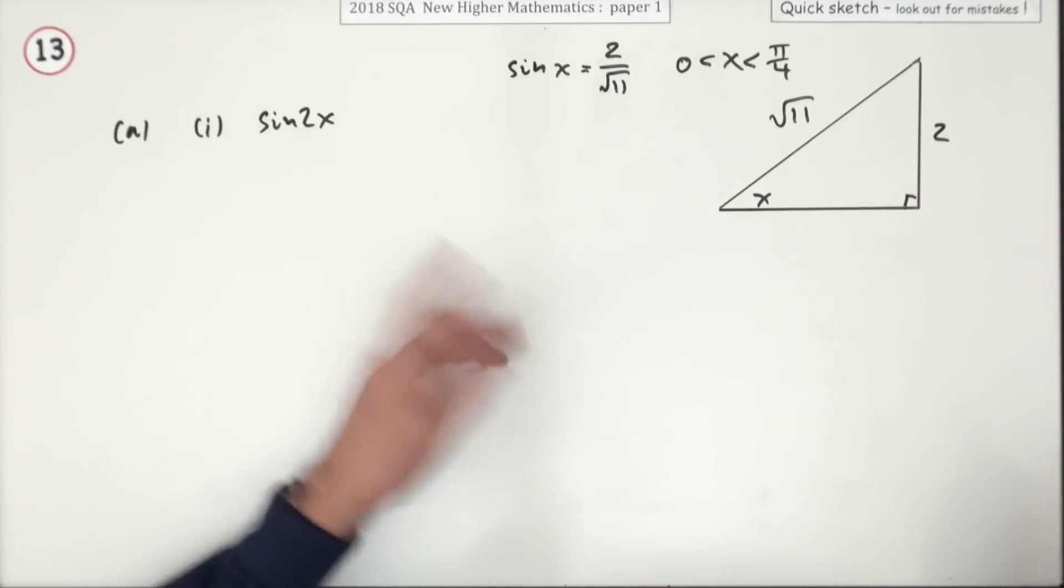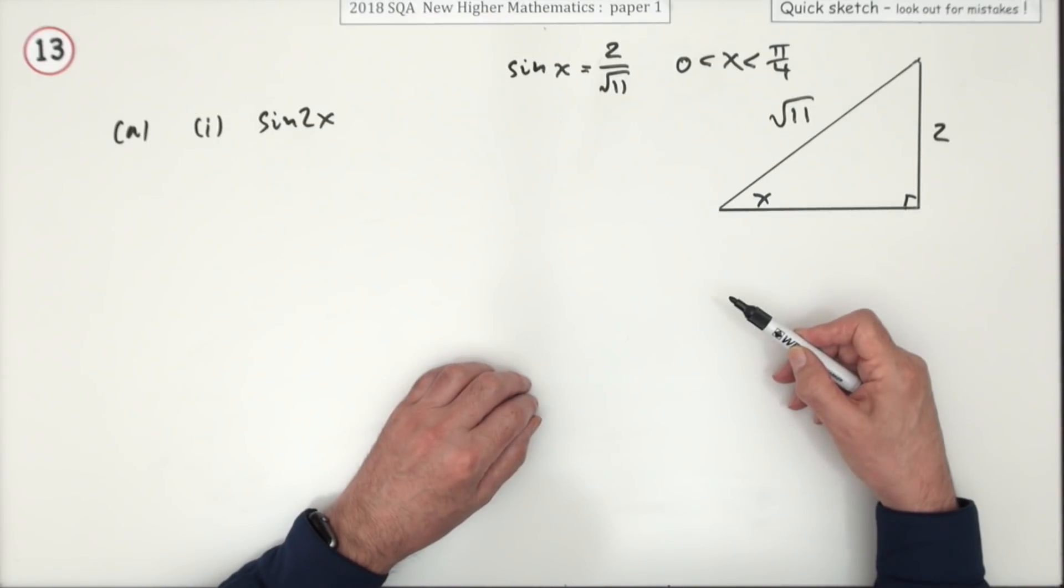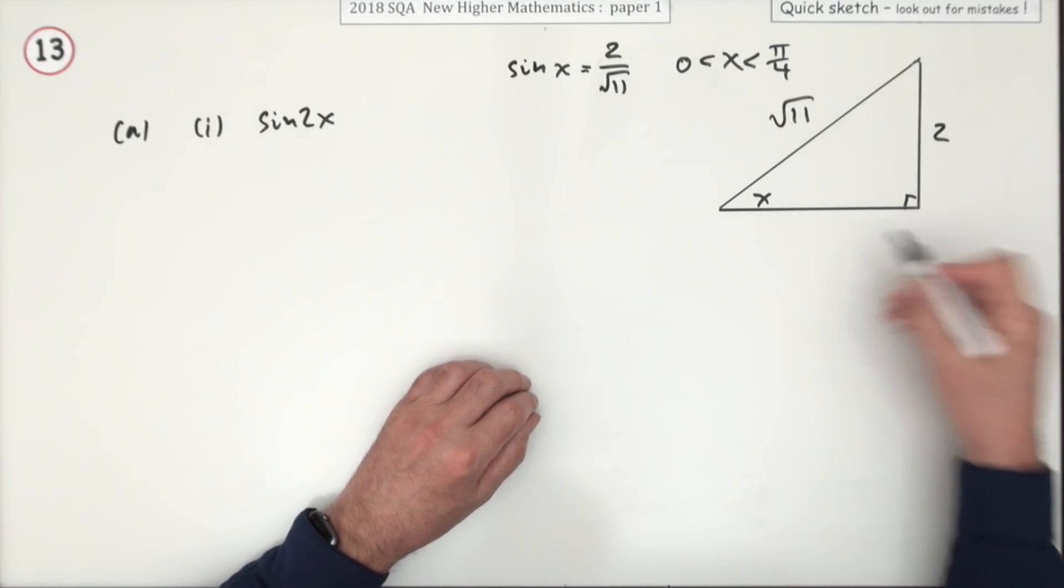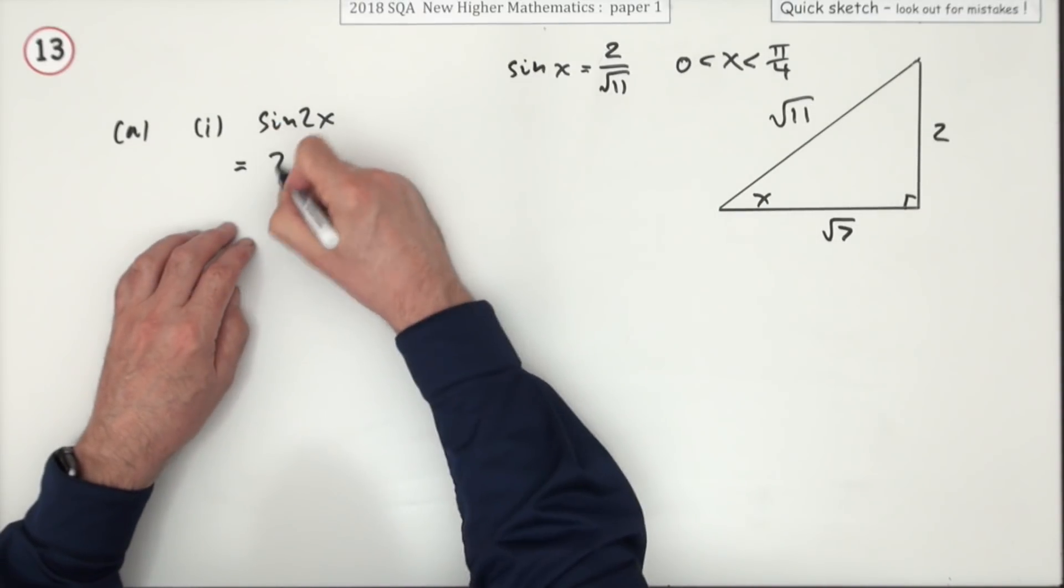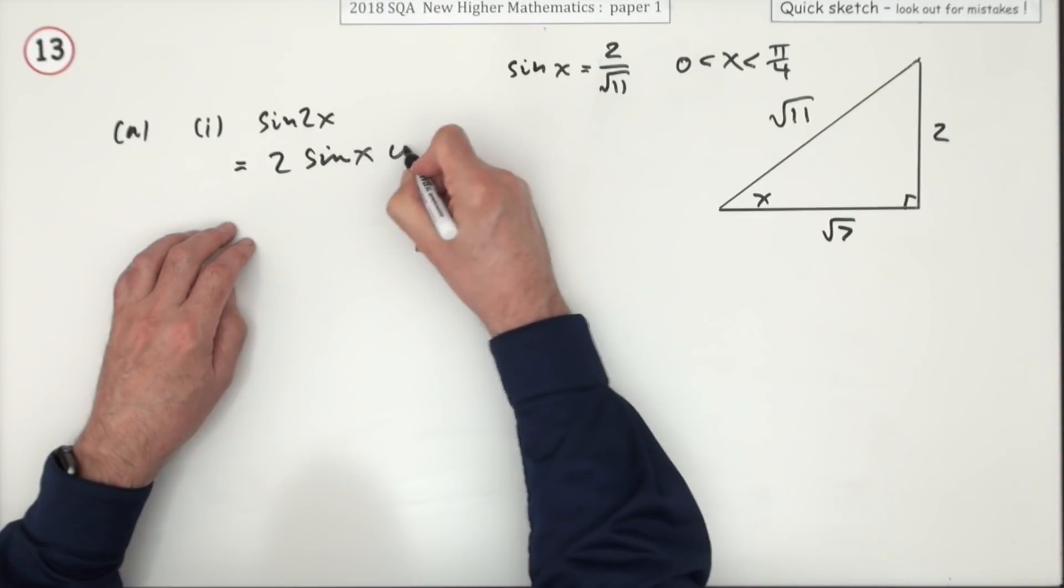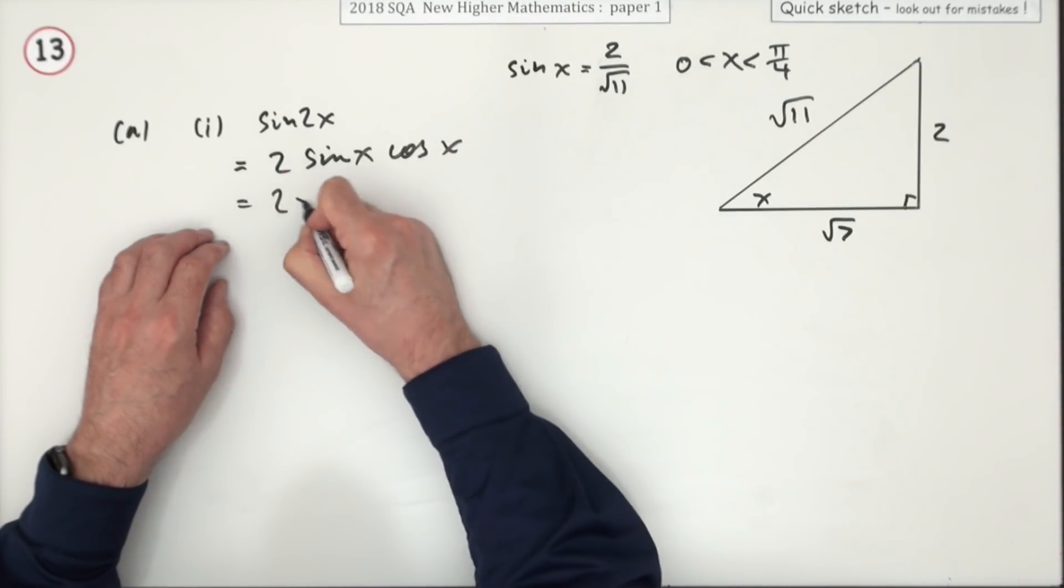Well, just fill in the remaining part. 4 from 11 is 7, so that side must be root 7. Then you'll look up the front and you see 2 sine x cos x, and you pop it all in.